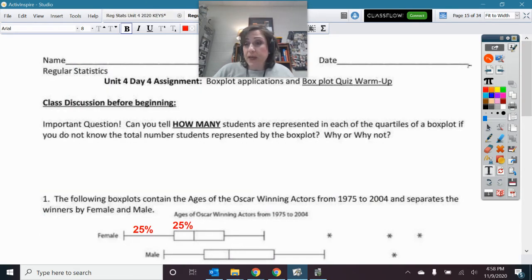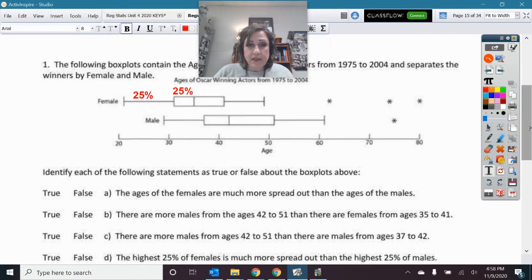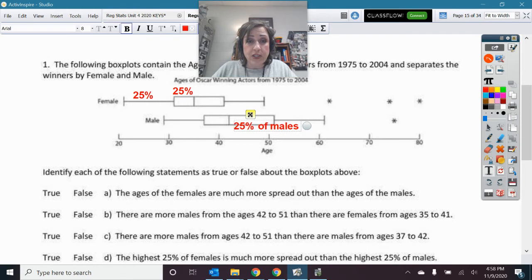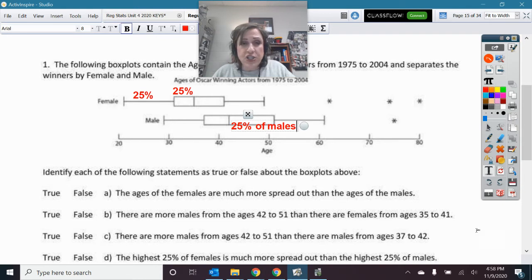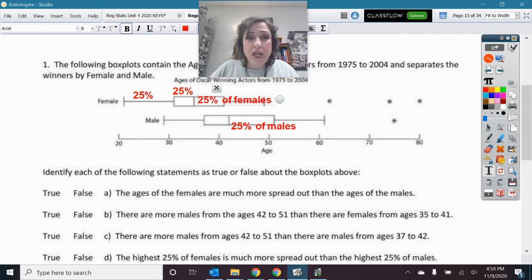Taking a look at this first problem here, we have some true and false statements. Let's look at statement B. There are more males from ages 42 to 51. Let's see where that is. Here's the males from 42 to 51. So that's saying there are more males in here, but I don't know how many that is. I know it's 25% of the males in that quartile. The statement says there are more males from ages 42 to 51 than there are females from ages 35 to 41. In this female section from 35 to 41, there's 25% of the females.